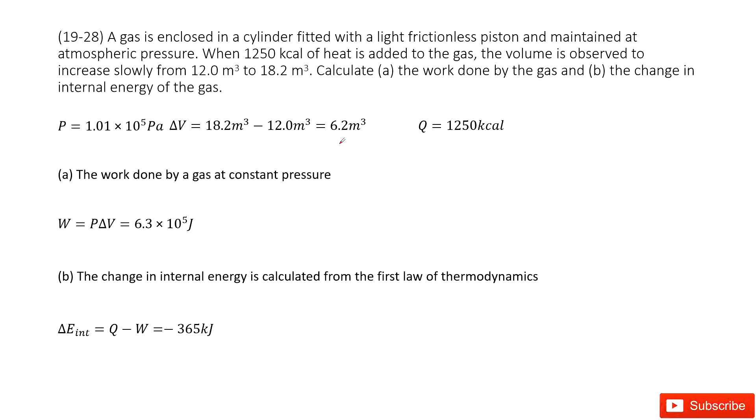Chapter 19 is about heat and the first law of thermodynamics. In this case we have ideal gas in a cylinder fitted with a light frictionless piston. We can consider the pressure is not changed, right? The ideal gas is in a box where the pressure will not change. The pressure is constant.